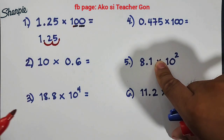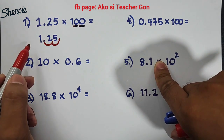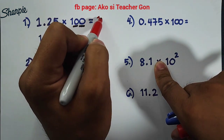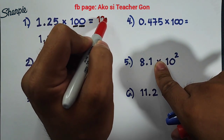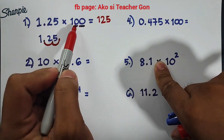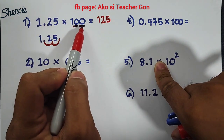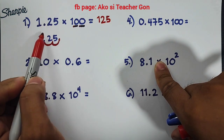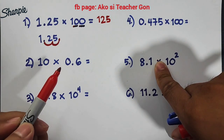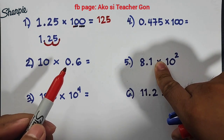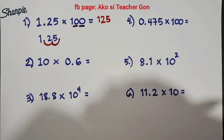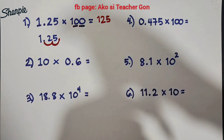So as you can see, the answer in number 1 is simply 125. We have 2 zeros, so we move 1 and 2, and it gives us the answer of 125 as a whole number. Let's move on with item number 2.